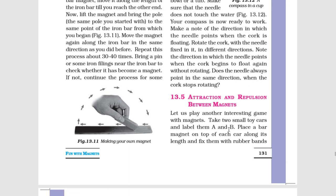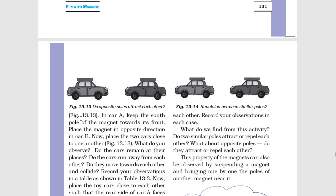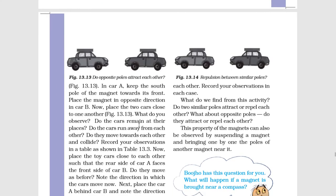Take two small toy cars and label them A and B. Place a bar magnet on top of each car along its length and fix them with rubber bands. In car A, keep the south pole of the magnet towards its front. Place the magnet in opposite direction in car B.